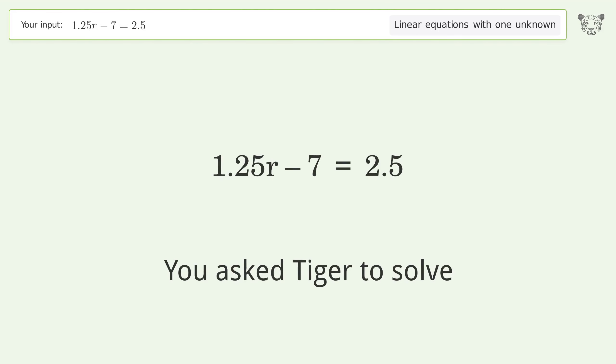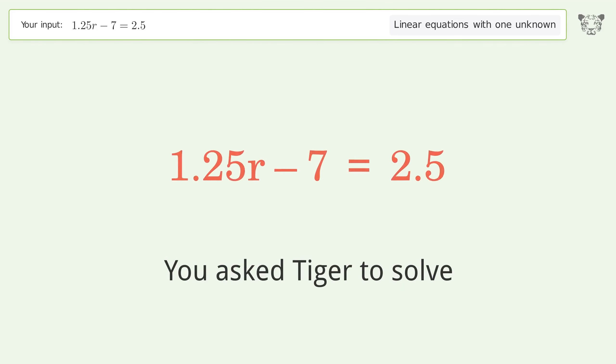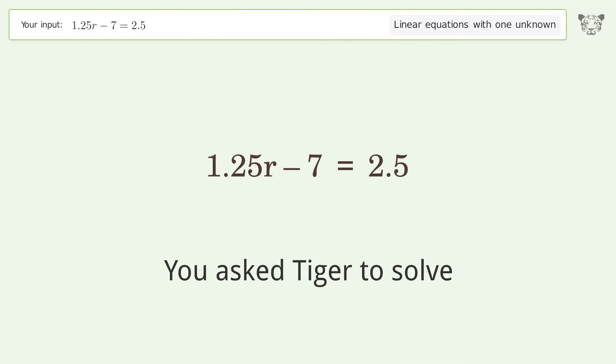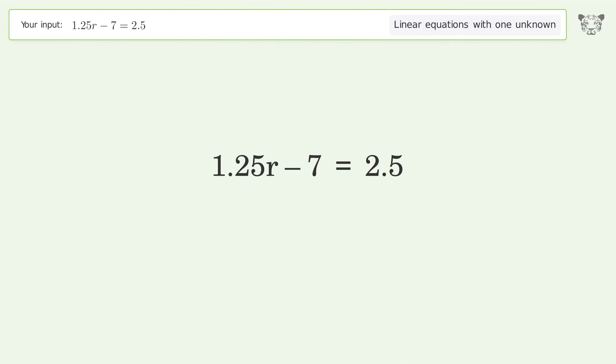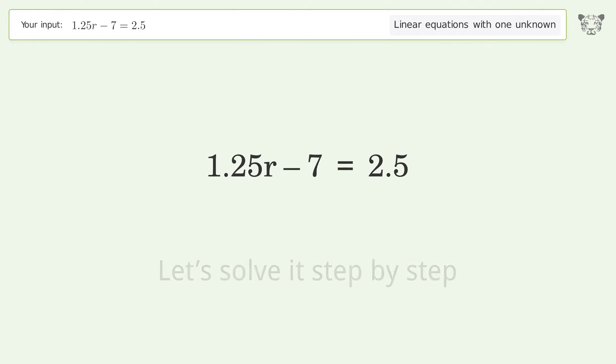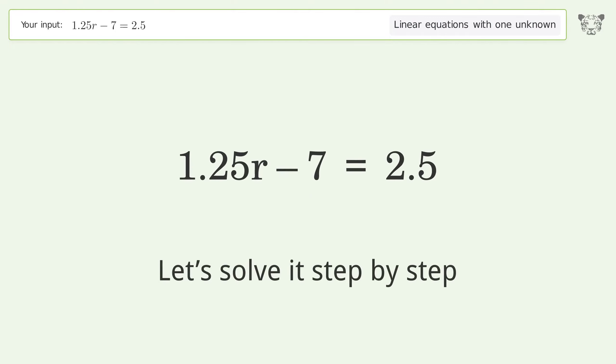You asked Tiger to solve. This deals with linear equations with one unknown. The final result is R equals 7.6. Let's solve it step by step.